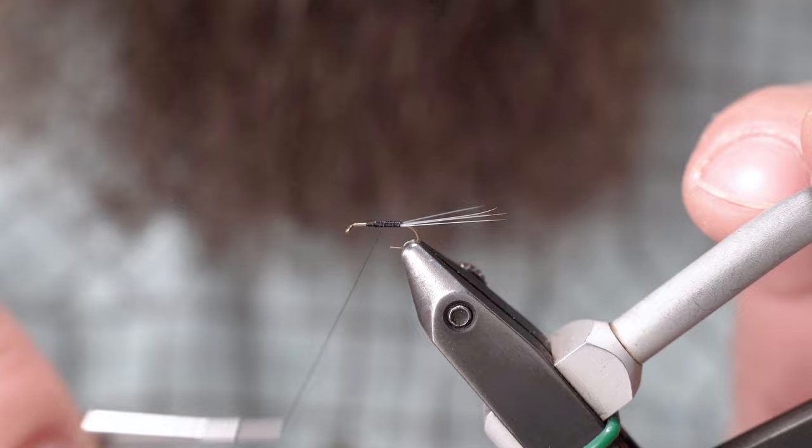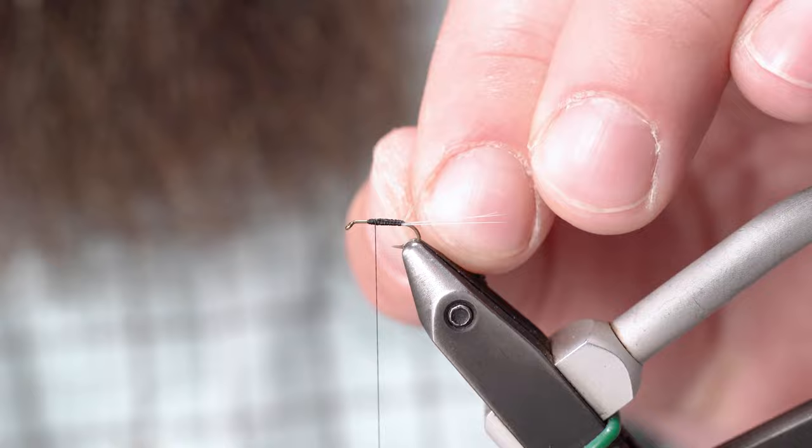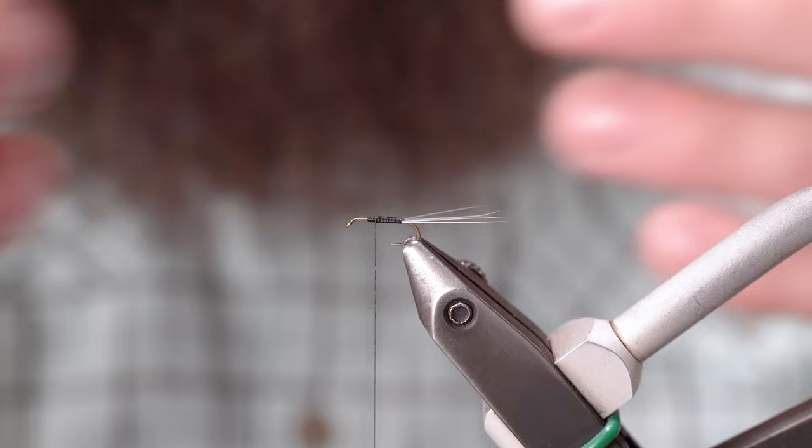Doing a couple wraps back just to cover some of that up. Nice and splayed out tails there. Don't pinch too hard, otherwise you'll curl those micro-fibits or mayfly tails.